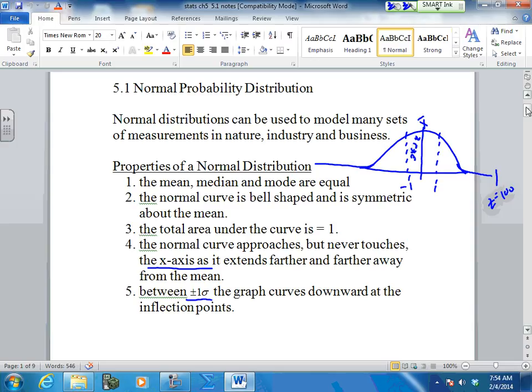Between plus and minus 1, these are called inflection points. This point right here, if this is plus and minus 1, it's an inflection point. An inflection point is somewhere where the curve changes.